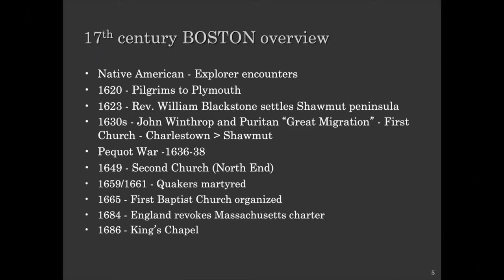A lot happened before those Presbyterians arrived. An important one is the 1630s — that first Puritan church, first in Charlestown and then on the Boston peninsula. Those people came for religious freedom, but apparently only their own. They weren't too welcoming, although they did allow some Baptists. And King's Chapel was Anglican and served the governors and soldiers, but it's so exciting that they're a Unitarian Universalist Christian church today.